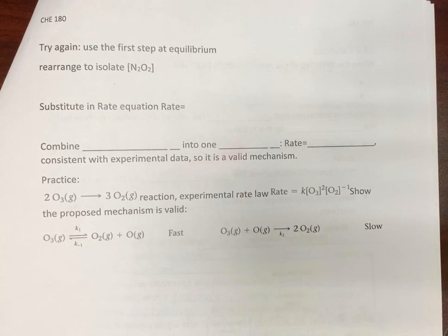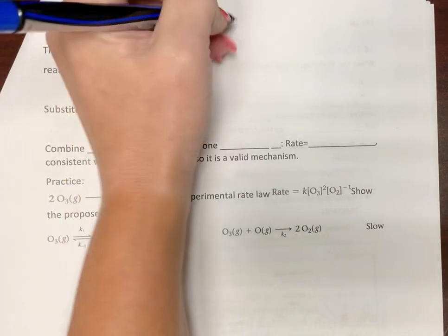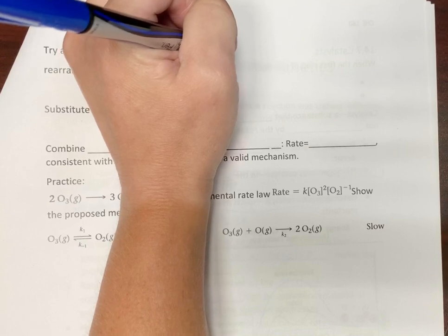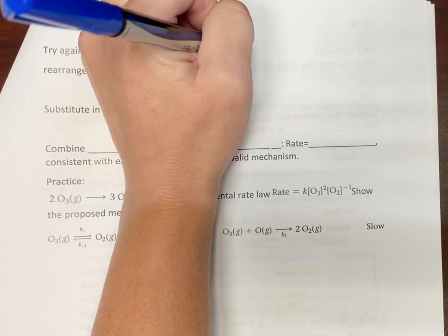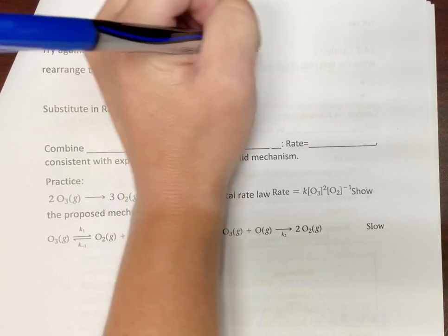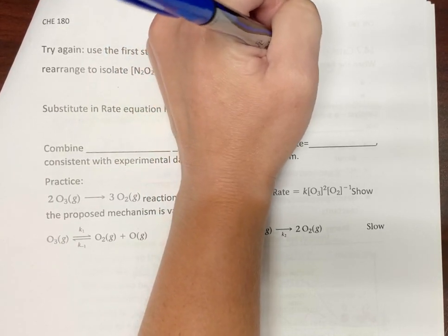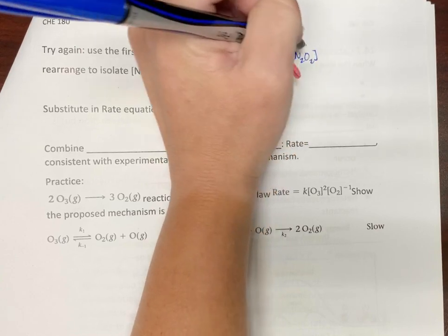So let's use our first step at equilibrium. So here we have K1, so NO squared, and then the backwards reaction, K negative 1, N2O2.